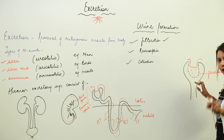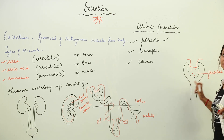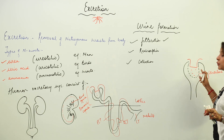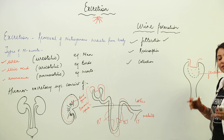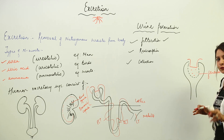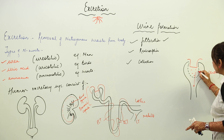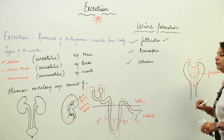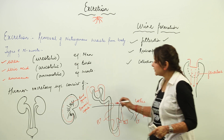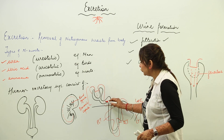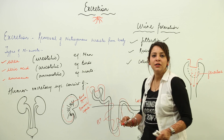In filtration, all the substances flowing in the blood — whether useful or non-useful — including hormones, enzymes, waste, everything — just diffuse from the blood into the Bowman capsule. From the Bowman capsule it is carried through the PCT and reaches the loop of Henle.